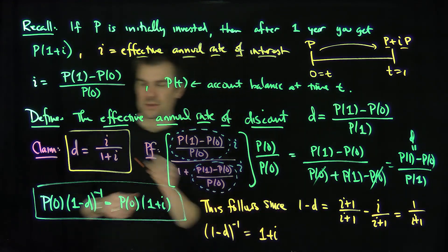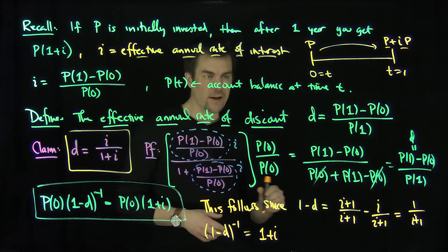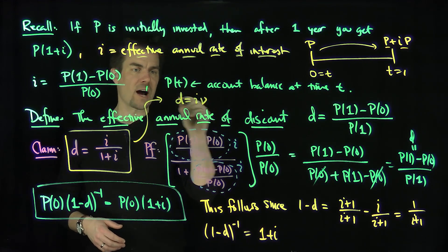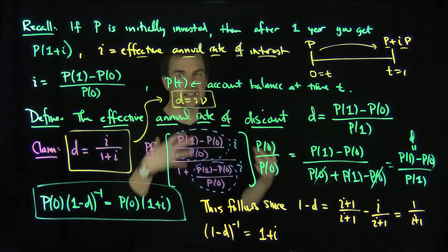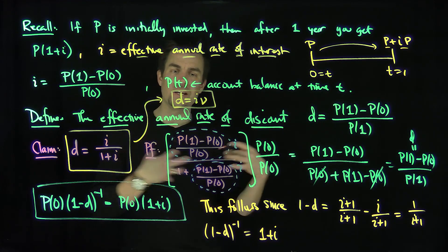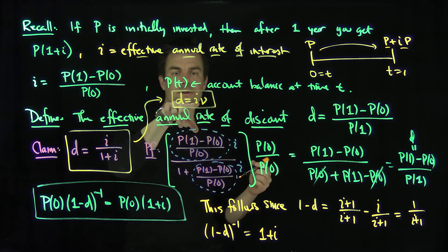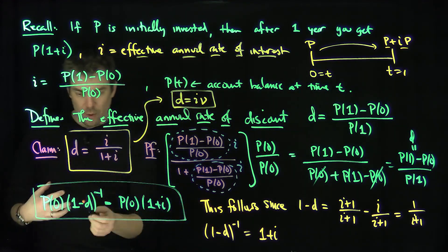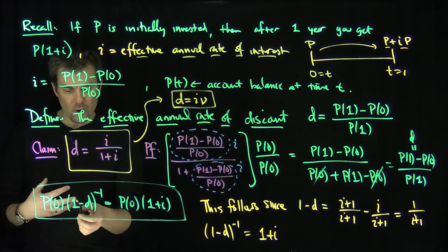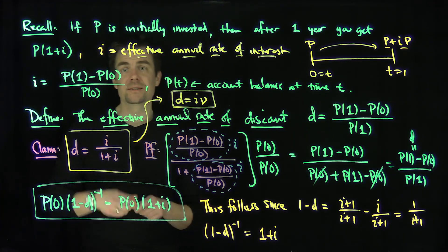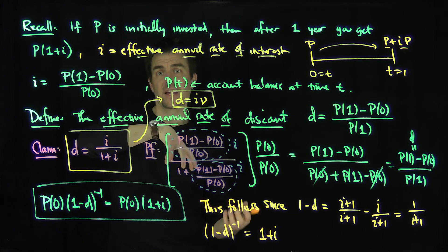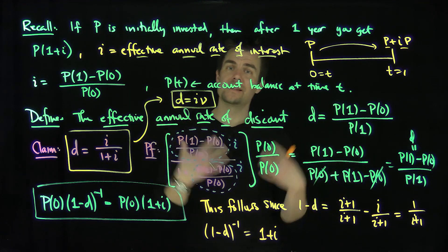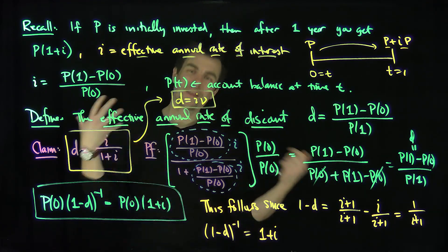There's one final relationship. Since 1/(1 + i) is the present value factor v, we have d equals i times v. This is easy to remember — think of it like a 'div', a dividend. So d = iv relates the discount rate, the interest rate, and the present value factor all in one formula. But the most important relationship to understand is P(0)(1 − d)⁻¹ = P(0)(1 + i), because it shows discount gives you your interest at the initial time and lets it grow to time 1. Thank you very much.